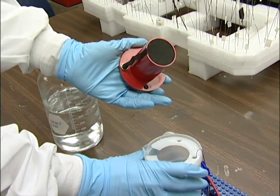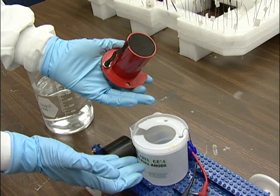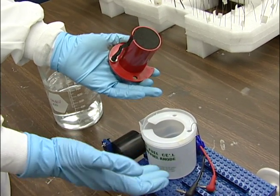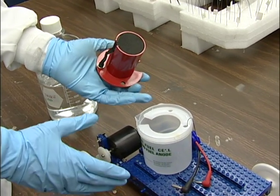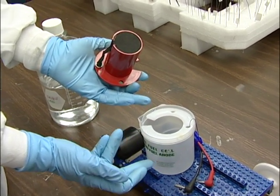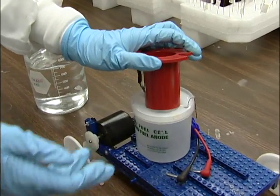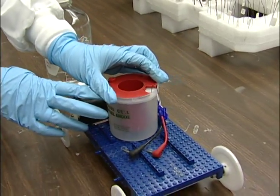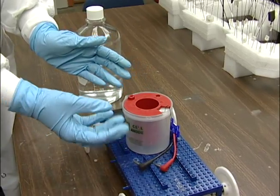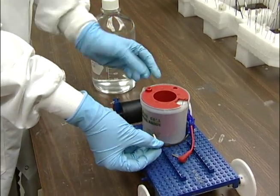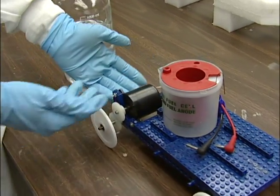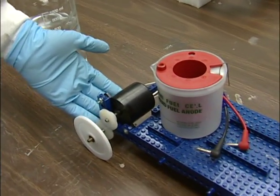We usually use an alkaline electrolyte, which is the ammonia plus the potassium hydroxide. We fill the container with the liquid and we put the two electrodes together in order to make the reaction happen. Then we connect the fuel cell to a servo motor that is the one that is going to make the car run.